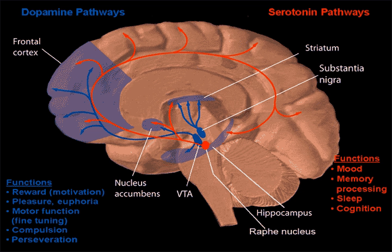Once the neurotransmitter binds to the GPCR protein, it causes a cascade of intracellular interactions that can lead to many different types of changes in cellular biochemistry, physiology, and gene expression. Neurotransmitter-receptor interactions in the field of neuropharmacology are extremely important because many drugs that are developed today have to do with disrupting this binding process.